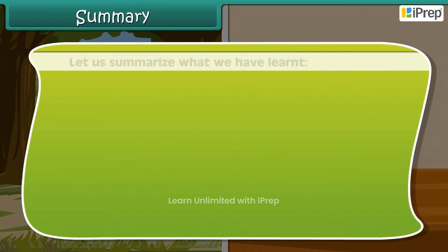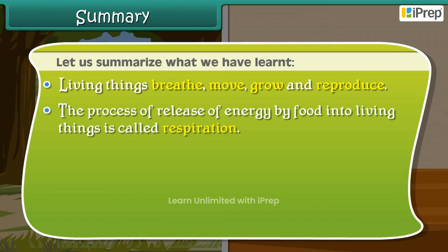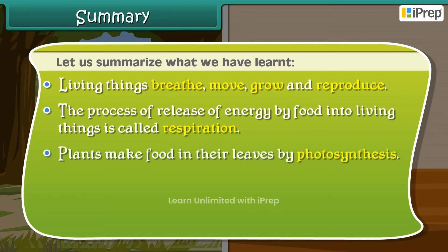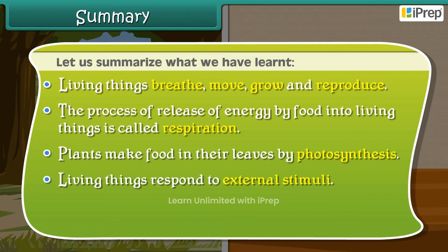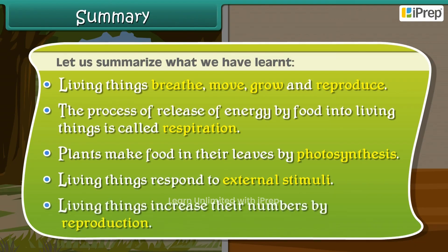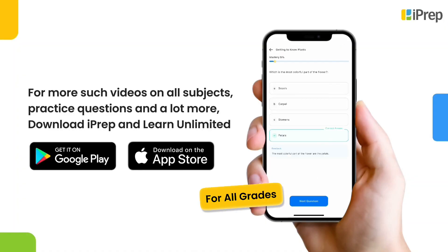Let us summarize what we have learned. Living things breathe, move, grow, and reproduce. The process of release of energy from food into living things is called respiration. Plants make food in their leaves by photosynthesis. Living things respond to external stimuli. Living things increase their numbers by reproduction.